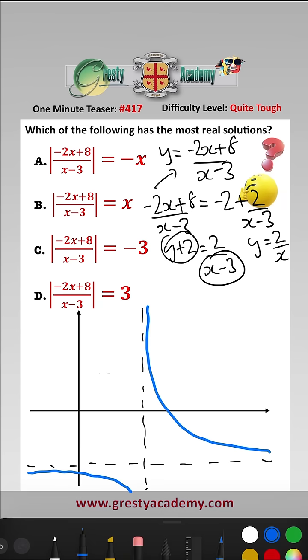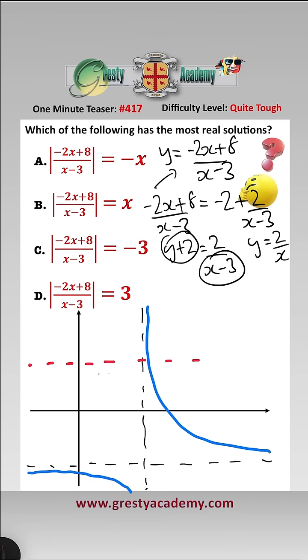Now we'll do the modulus. All we need to do is just make sure that everything is now above the x-axis. So therefore we would have this here. So y equals mod of minus 2x over x minus 3 would look like this. The red.